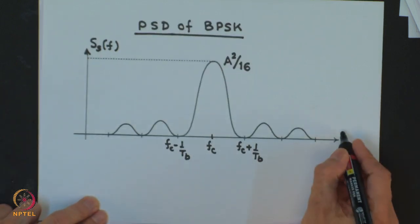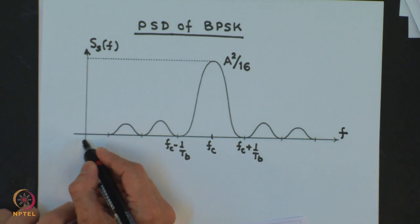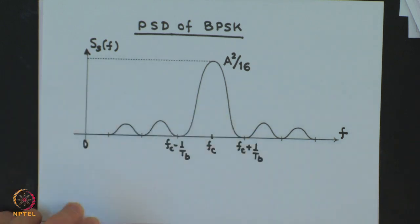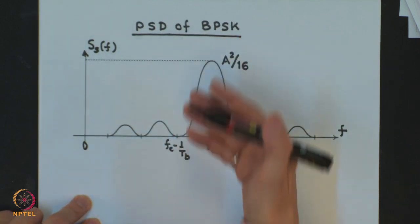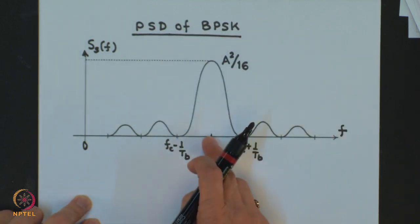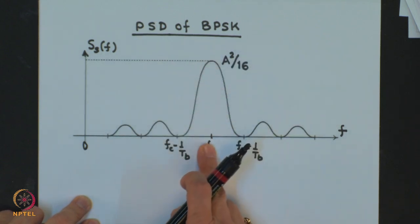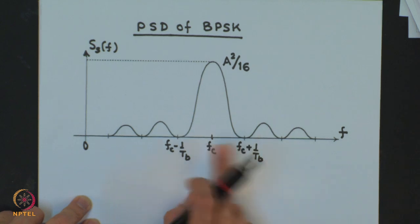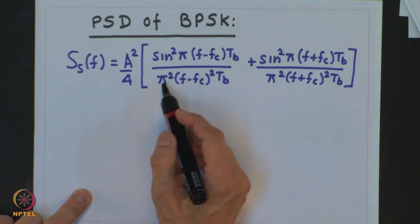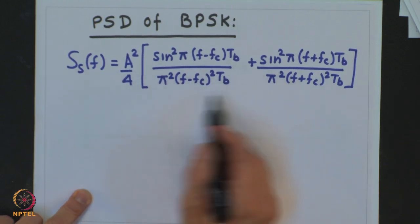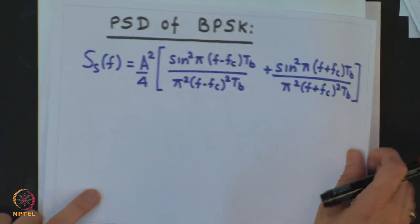Plotting the power spectral density, it looks as shown — I am showing the right side of the frequency axis only; the same will be valid on the left-hand side. The key difference between BPSK and BASK is that in BPSK there is an absence of the carrier component at F_C. That is the only difference.